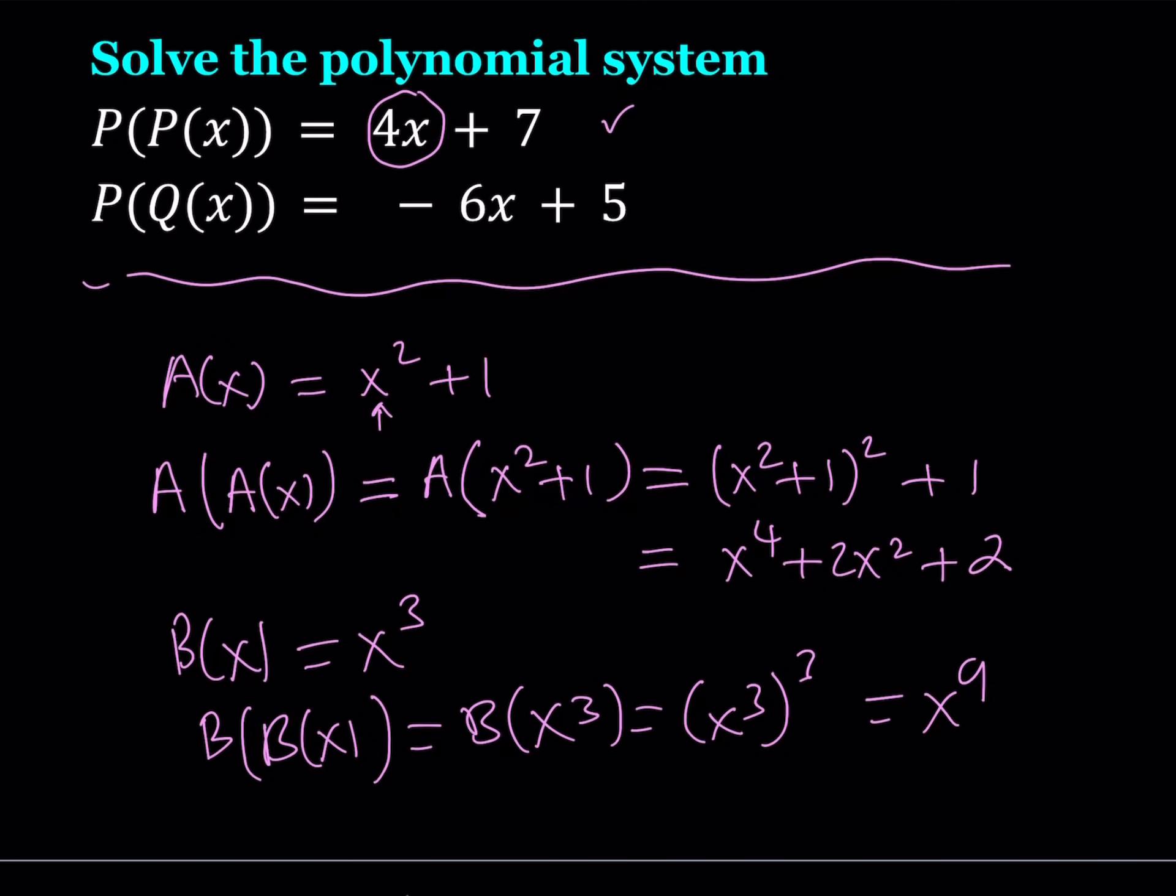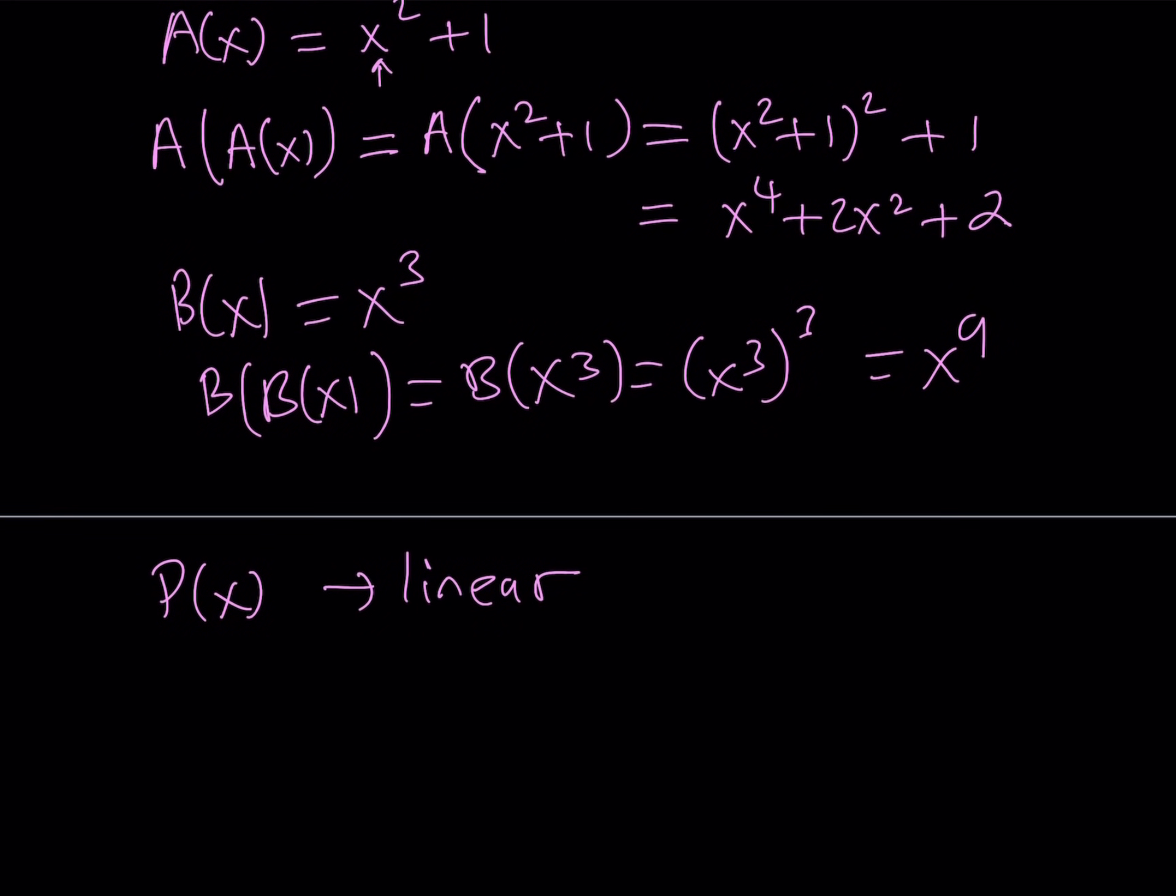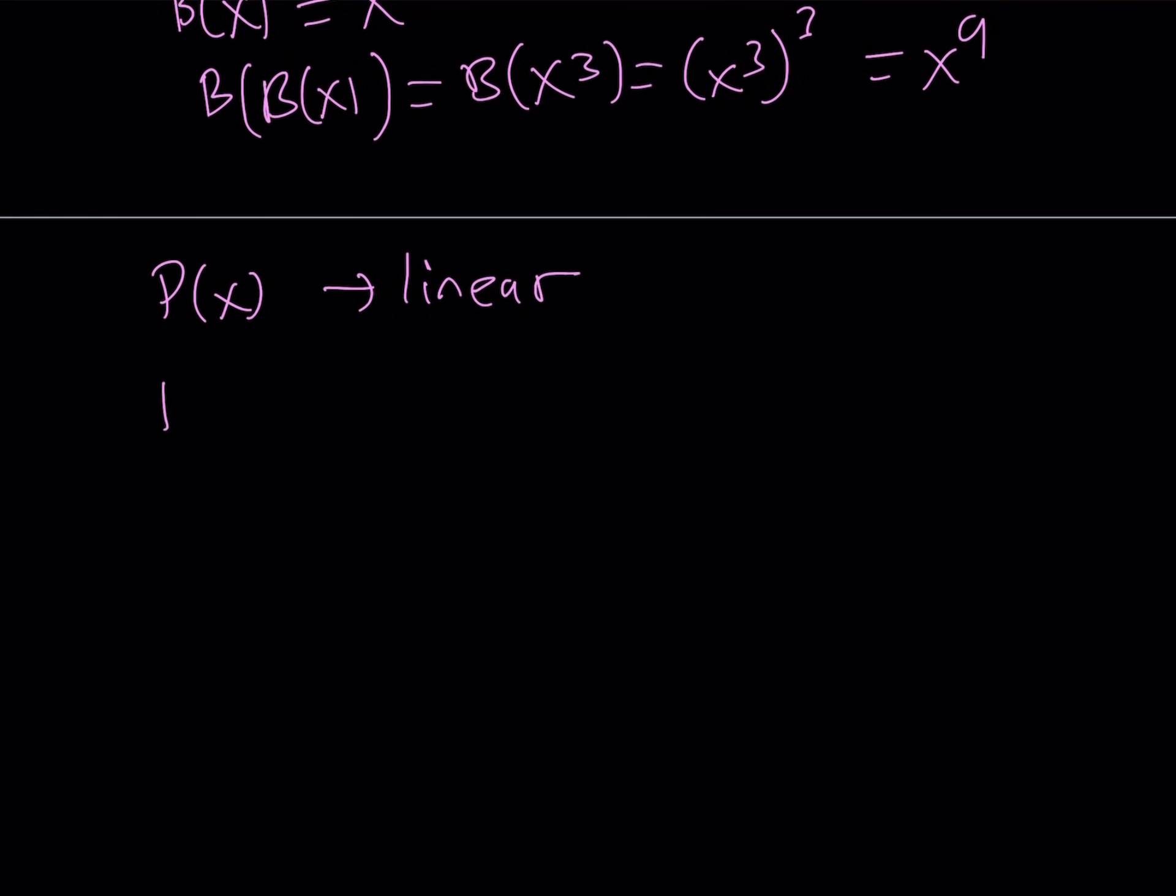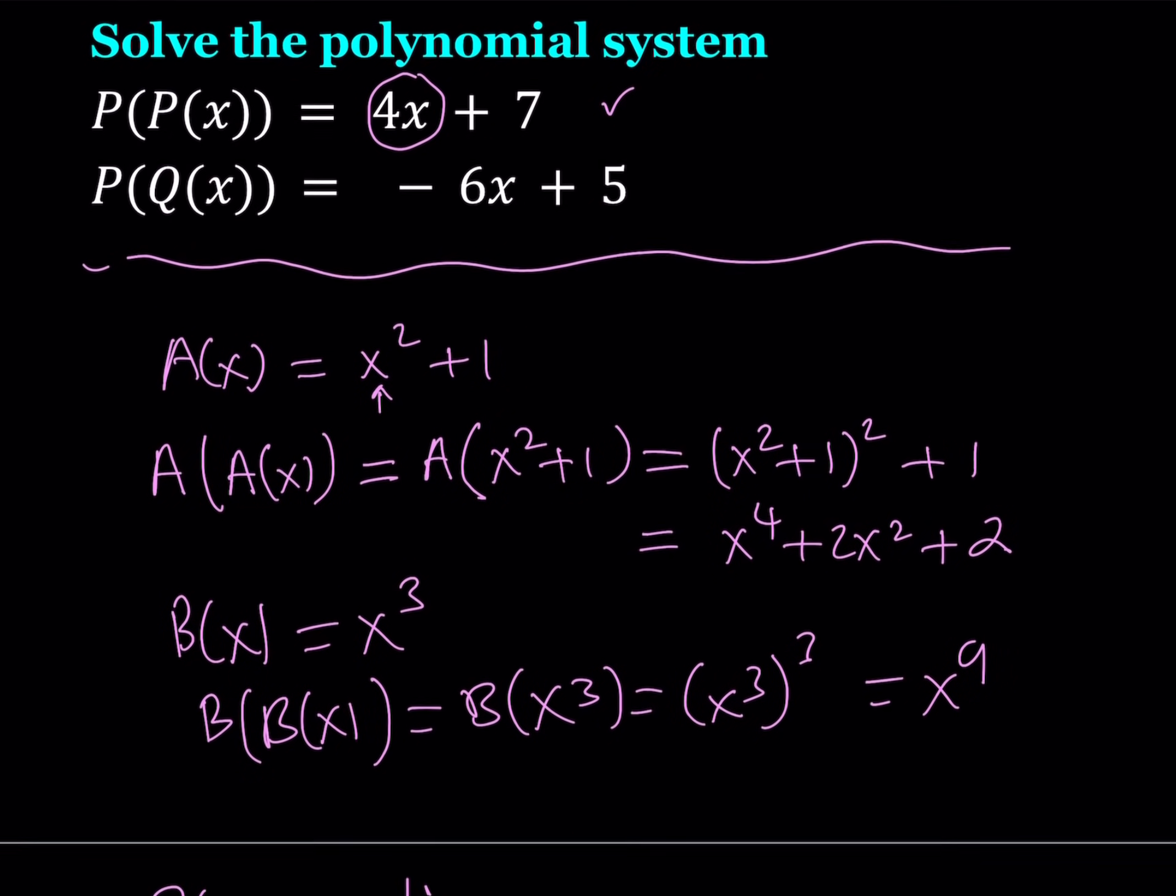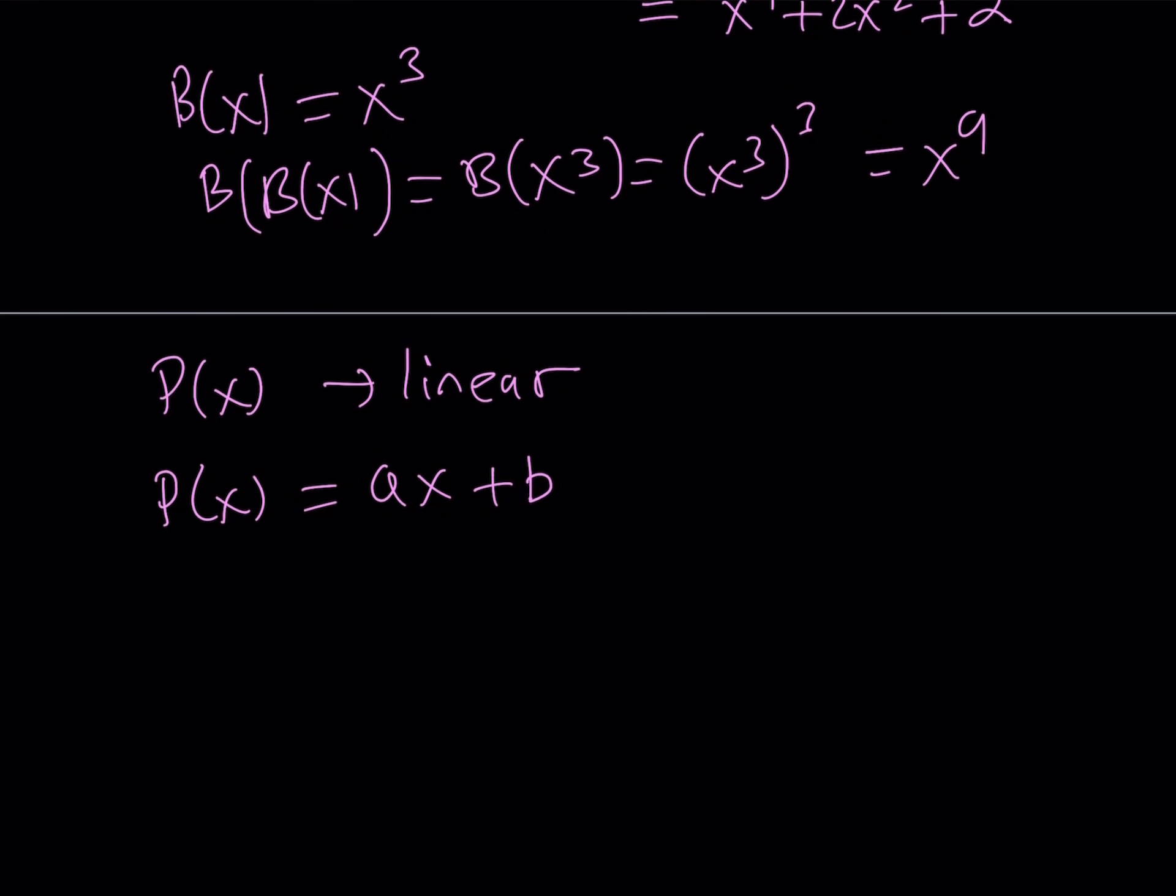So P of X needs to be linear. Let's go ahead and solve the first equation first. This is not something you can do elimination or substitution with yet. Let's find out P of X first. If P of X is linear, can I write it as AX plus B, where obviously A is not equal to 0.